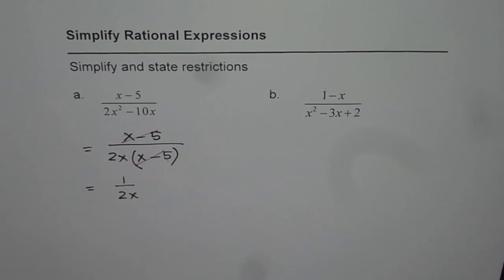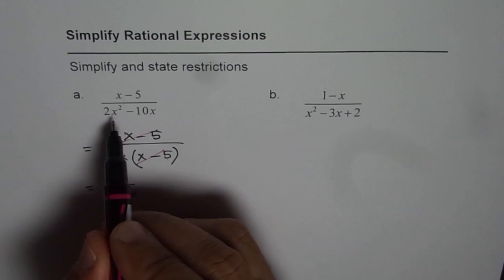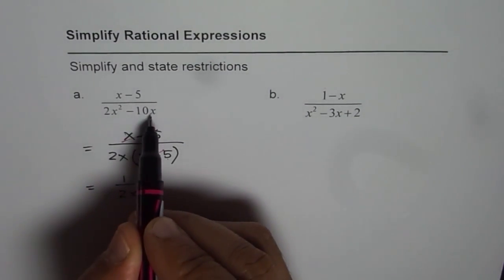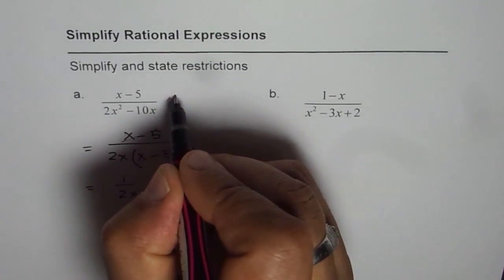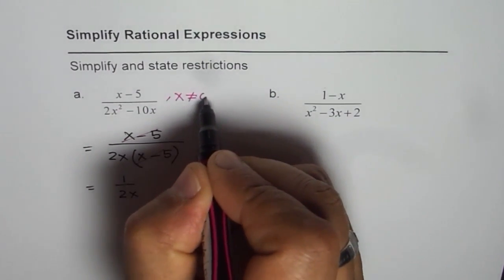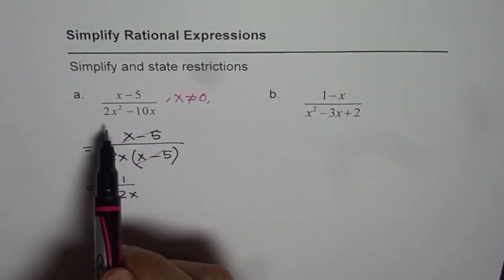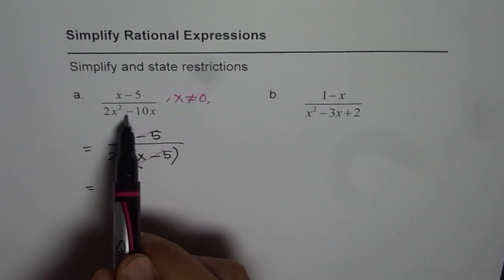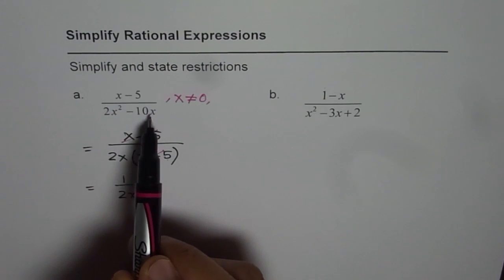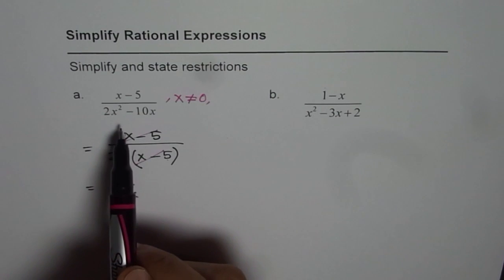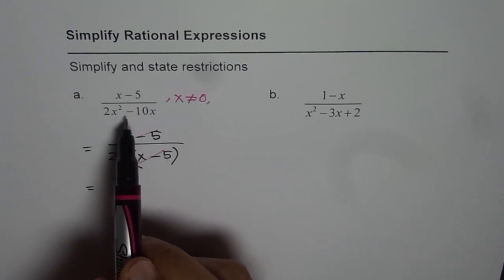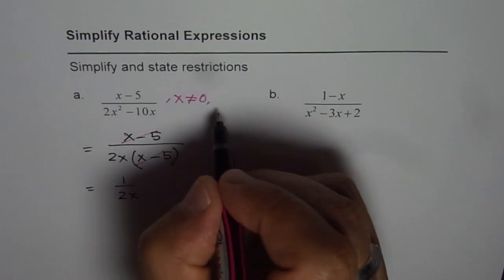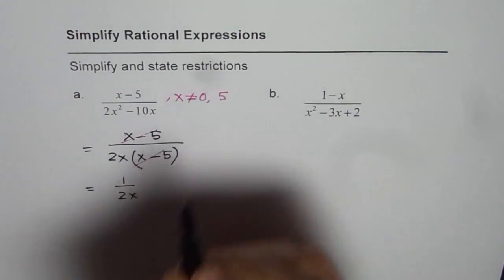In fact, in the original expression, if I write x as 0, you'll get 0 in the denominator and that is a restriction. So we say x is not equal to 0. Second, if I write x as 5, 5 squared is 25, 25 times 2 is 50 minus 10 times 5 is 50, also giving you 0 in the denominator. So the expression has two restrictions: x is not equal to 0, and x is not equal to 5.